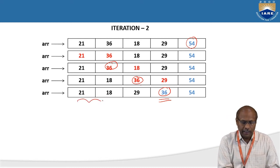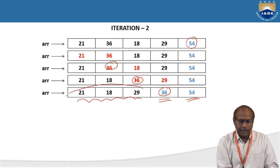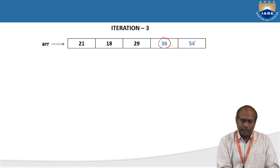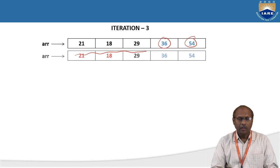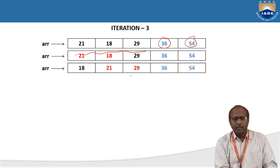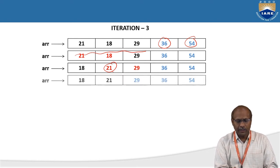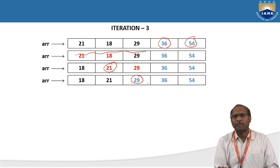Now the remaining three elements go to the third iteration. These two positions are already sorted, so in the next iteration only these three elements will be processed. Compare 21 with 18: 21 is bigger than 18, so swap. After swapping, 21 moves down. Now compare 21 with 29: 21 is smaller, no need to interchange. Stop. At the end of the third iteration, the third biggest element has come to its correct position from the last.